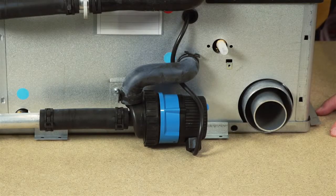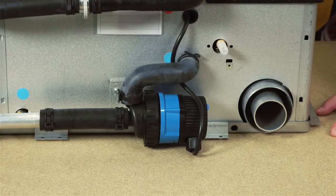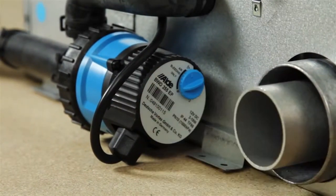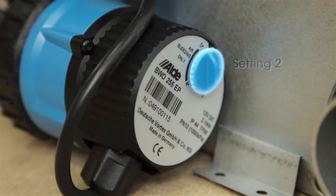Before replacing the pump, it's a good idea to understand why it might have failed. Check that the speed dial is not on setting 5, it should be on setting 2.